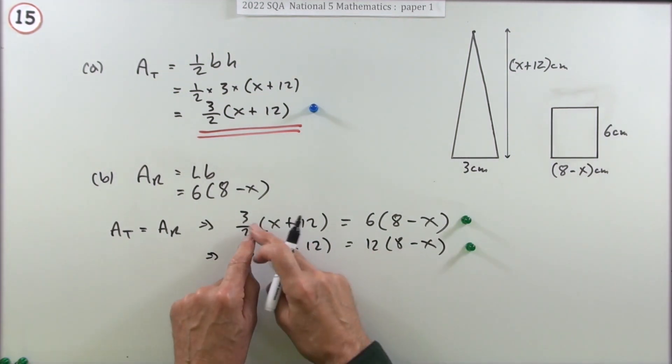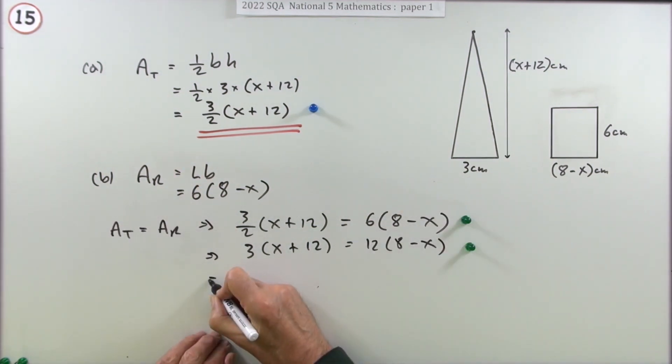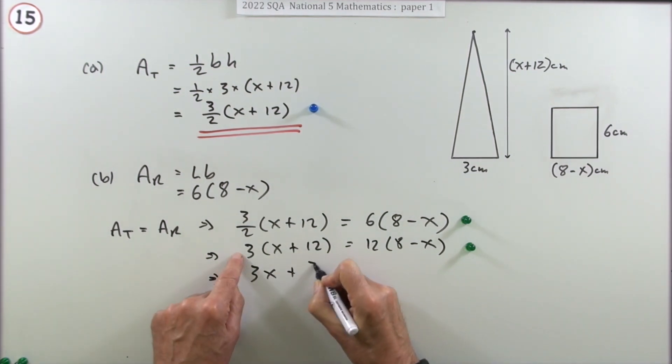Get rid of the fractions. You could also just multiply out keeping the fractions there, in which case that would be worth a mark. But now tidy that up, so you've got 3x plus 36.